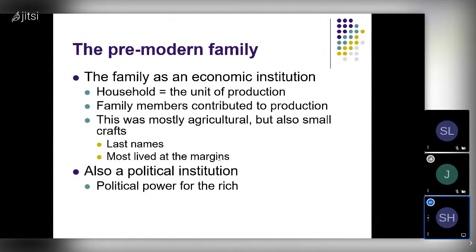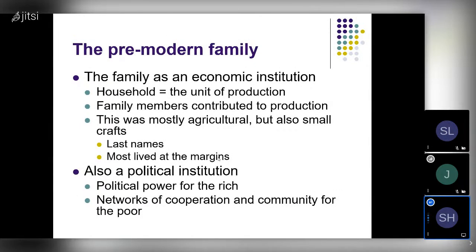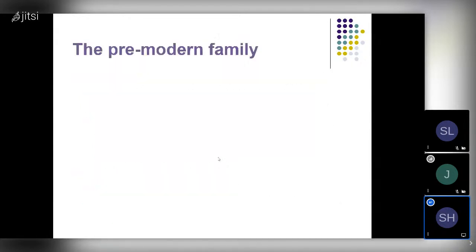For rich people, the family was a path to political power. Who you married if you were rich and powerful mattered — marriages were ways of consolidating power. Think of many Shakespeare plays that reflect this. Even for poor folks, marriage had an important political function: it created broader networks of cooperation and community. When you married someone, you doubled your family, expanding your ability to access resources at a time when people were poor. So these instrumental purposes of the family were quite important historically.